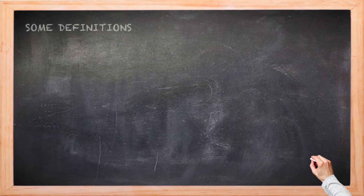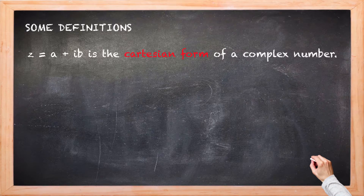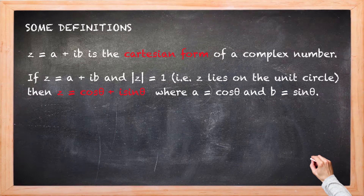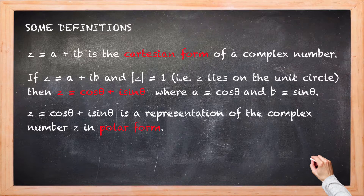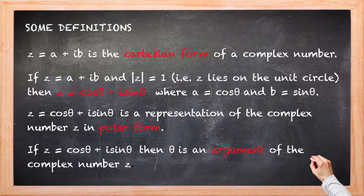Let's summarise. Complex numbers written in the form a plus ib are in Cartesian form. Complex numbers that sit on the unit circle in the complex plane — those with modulus 1 — can be written in the form cos theta plus i sin theta. That representation is called polar form. The angle of rotation theta is called an argument of that complex number z.